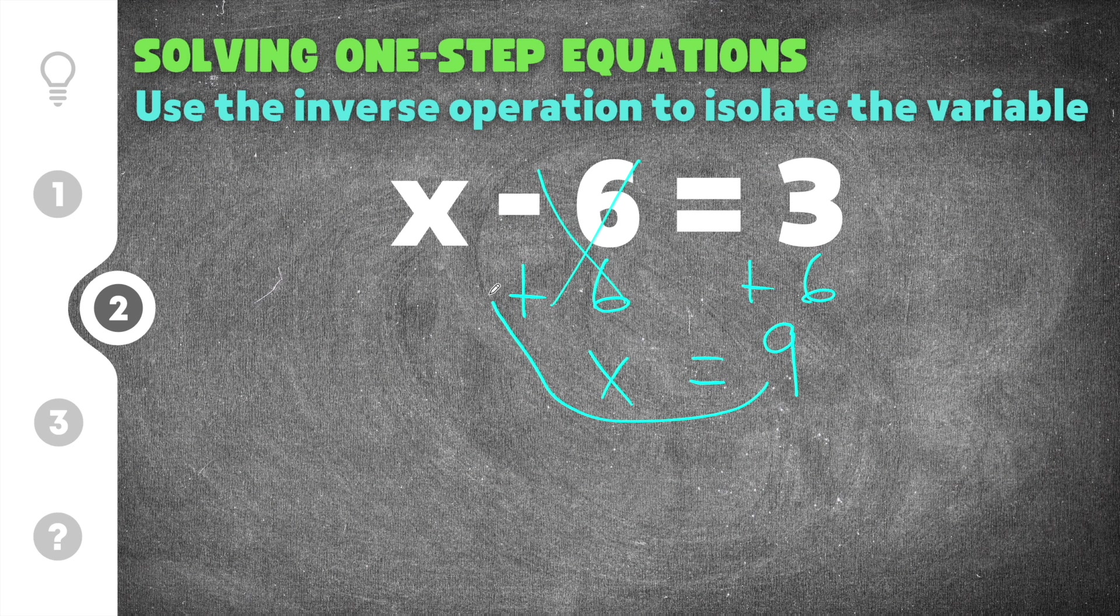Then again the last step we can do is we can take our solution which is 9 and plug it in for x and substitute it in. So we got 9 minus 6 now equals 3. And then 9 minus 6 is 3, so we have 3 equals 3. That's a true statement so we know our solution is correct.